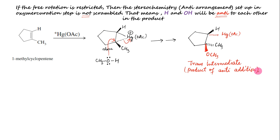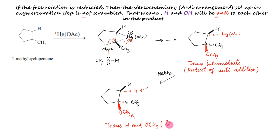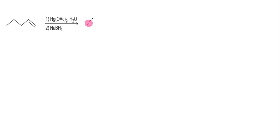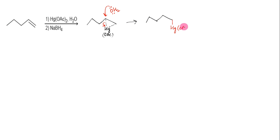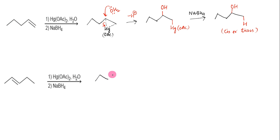This is then reduced with sodium borohydride to replace the mercuric group with hydrogen without disturbing the stereochemistry, to form the product in which the nucleophile — the methoxy group — and H are trans to each other. Now consider the oxymercuration-demercuration of 1-pentene. The first step is formation of the mercurinium ion, which is then opened on the more substituted side to form the organomercurial alcohol, which is then treated with NaBH4 for demercuration to replace the mercury group with H.